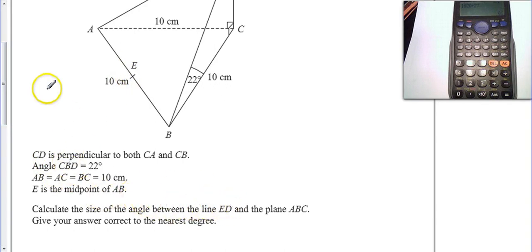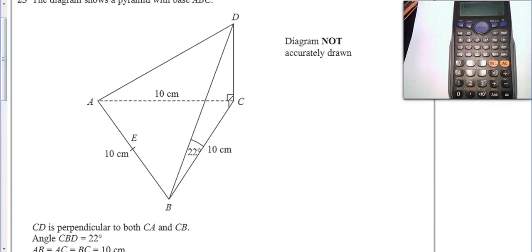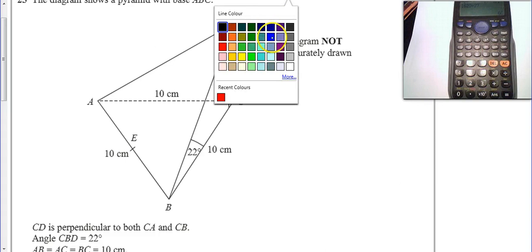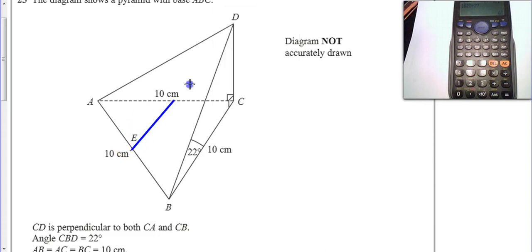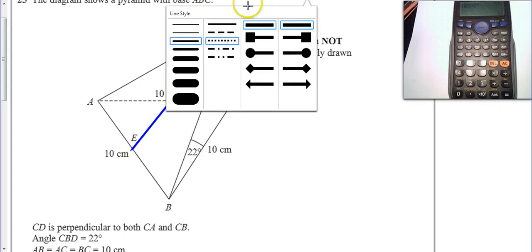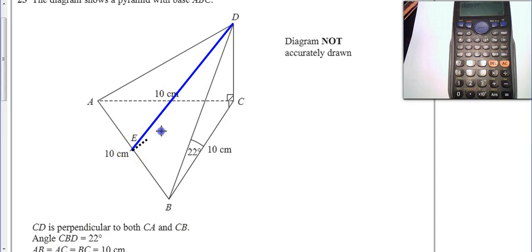The angle between ED and the plane ABC. Well, ED looks like this - ED is up here, and the plane is that bottom bit along there. Where this bit also forms a right angle there, that's what we're looking for. It's looking for this angle in here, so let's call this theta.